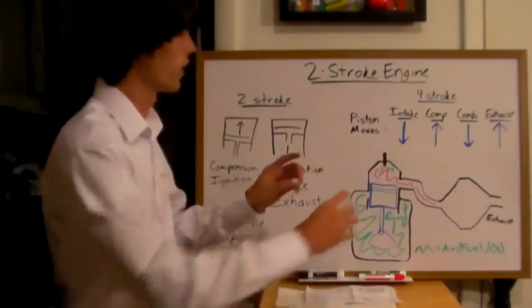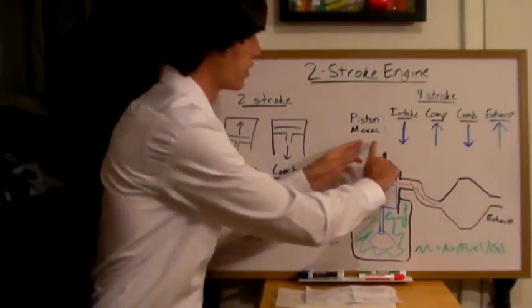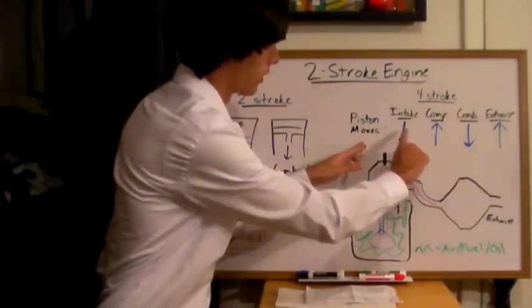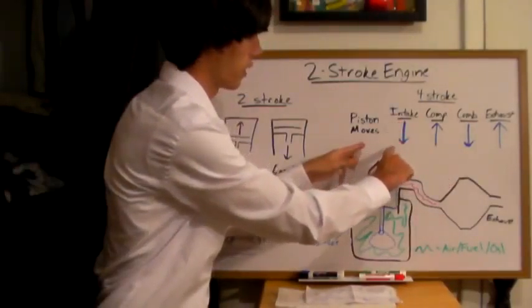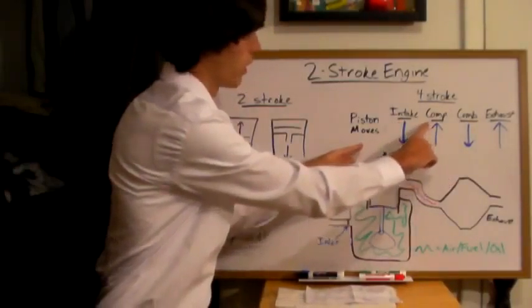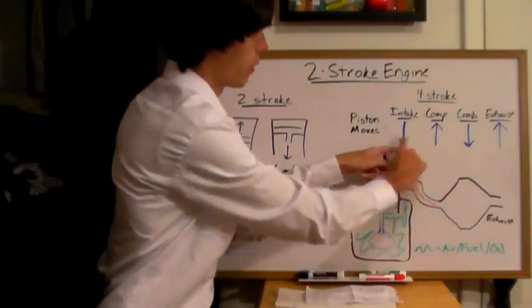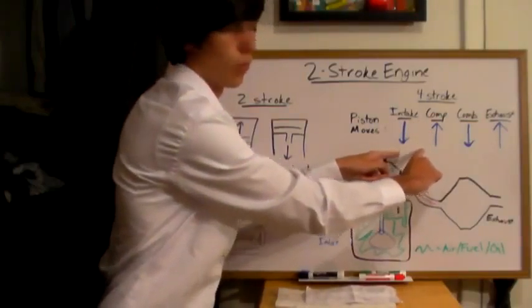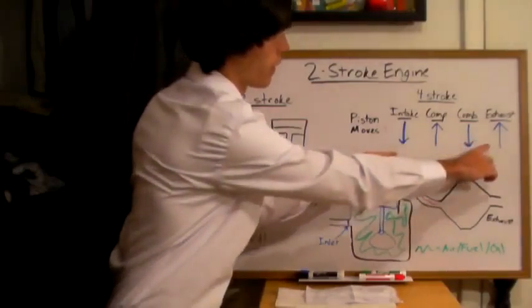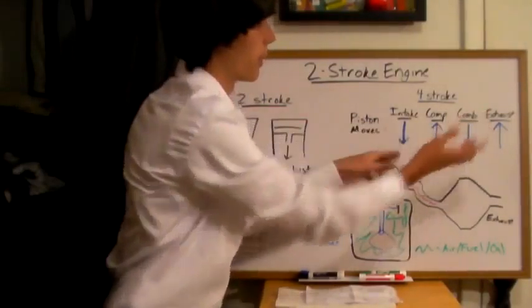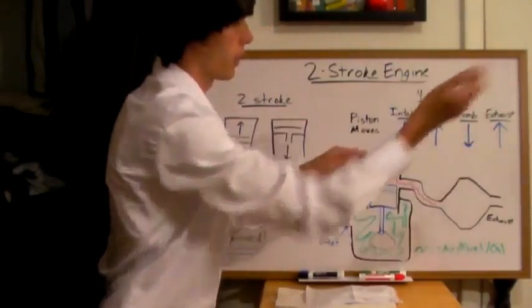Here's how this works. In a four-stroke engine — and here I've got labeled the direction that the piston will be moving — you'll have the intake, where the piston goes down. You'll have compression, where the piston moves up. You'll have combustion, where the piston moves down. Each one of these up-and-down movements of the piston represents one rotation of the crankshaft. And then finally your exhaust, where the piston moves back up and pushes out the exhaust.